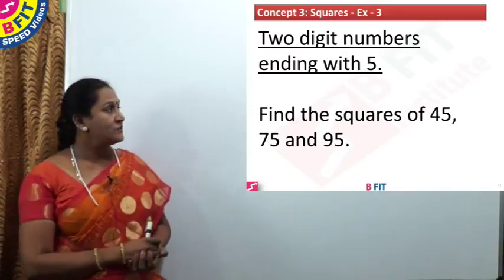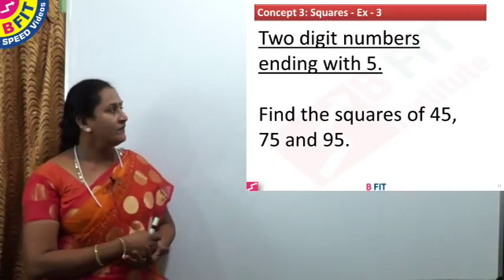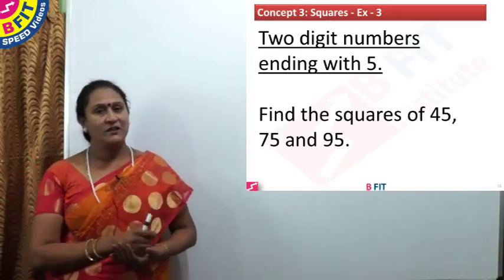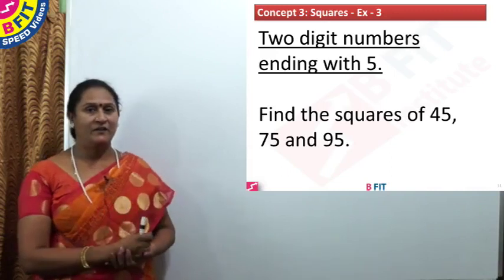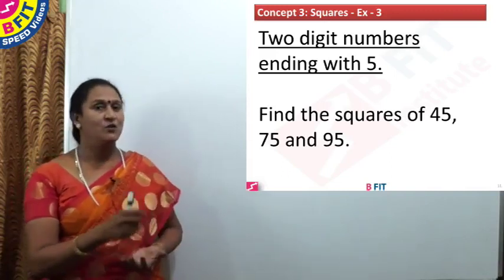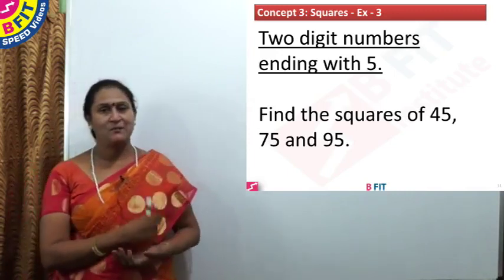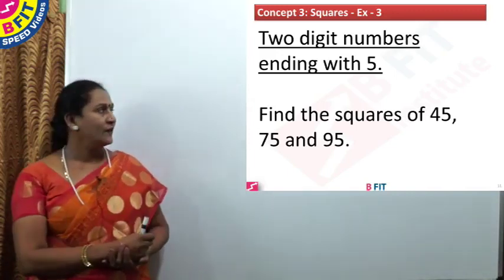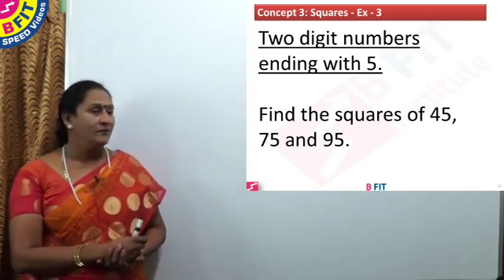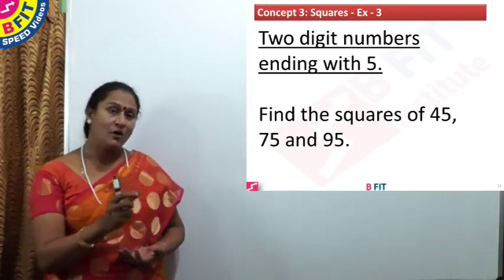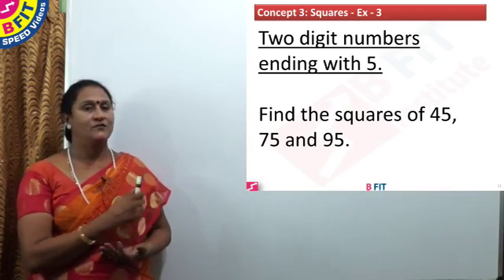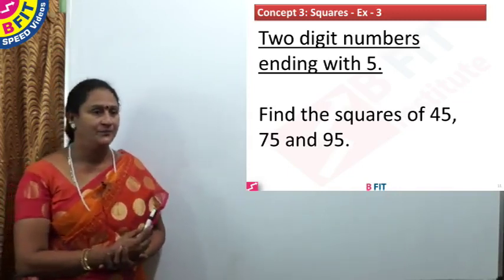The next question is to find the squares of 45, 75, and 95. We are asked to find squares of two-digit numbers ending with 5. Whenever a number ends with 5, it is easier to work out. Numbers ending with 5 have an important squaring concept, and whenever there are approximation questions, we can use this pattern.